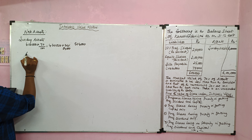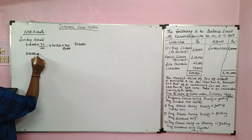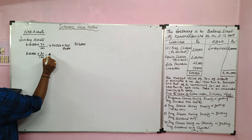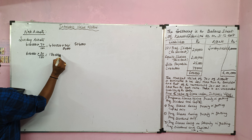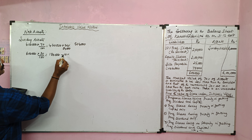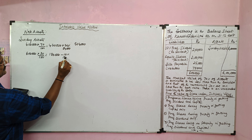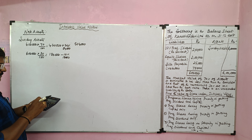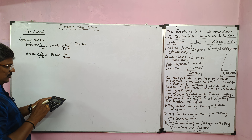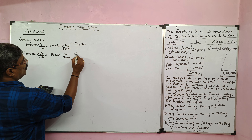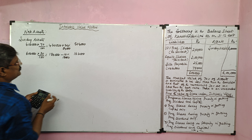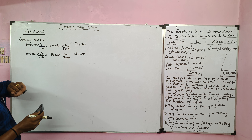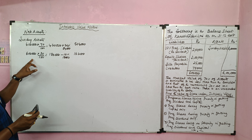Now take the balance 30%, which is 1 lakh 80,000. It is reduced by 10%, so 10% of 1 lakh 80,000 is 18,000. So 1 lakh 80,000 minus 18,000 gives a balance of 1 lakh 62,000 for the 30% portion.